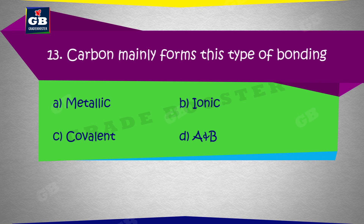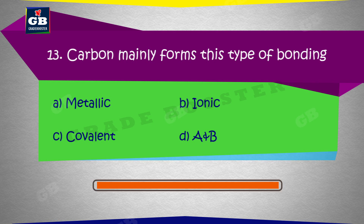Carbon mainly forms this type of bonding — carbon addiktar is prakar ki bonding banata hai: a) Metallic, b) Ionic, c) Covalent, d) A and B.